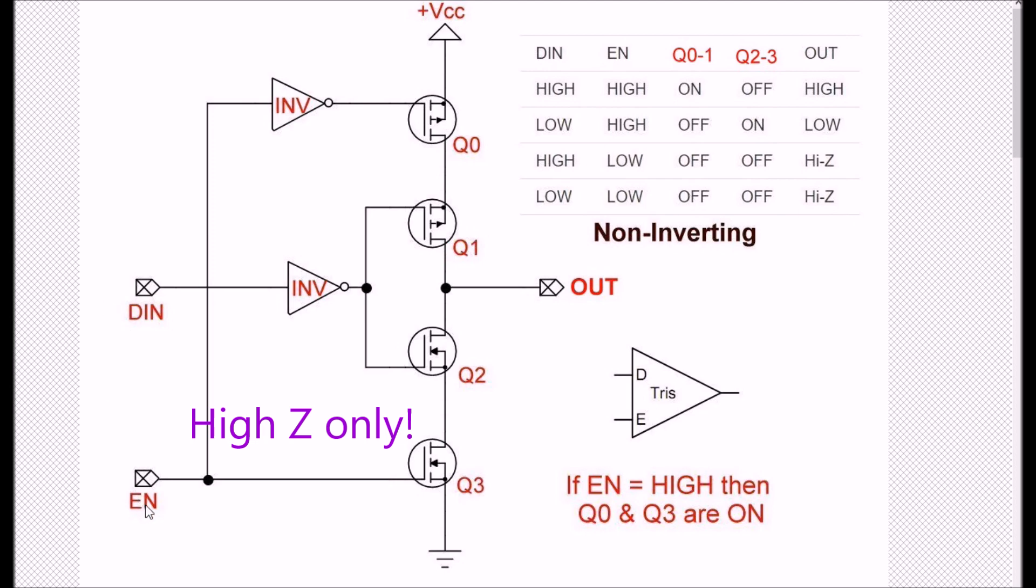First, let's say we're going to have the enable high. A high on the gate of Q3, an n-channel MOSFET, will turn Q3 on. A high into this inverter is going to be inverted to a low, so I'm going to have a low on the gate of Q0, a p-channel MOSFET. At this point, Q0 and Q3 are both turned on. A high on DIN is going to be inverted to a low, which will turn on Q1 and off Q2. So I have a current path now from VCC, Q0 and Q1 to the output. That's a high.